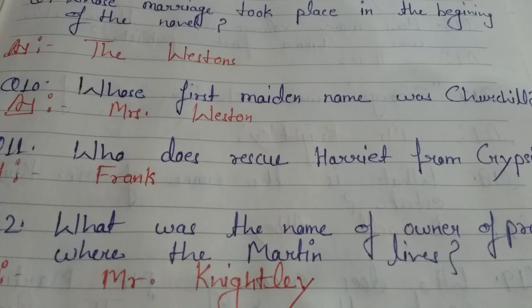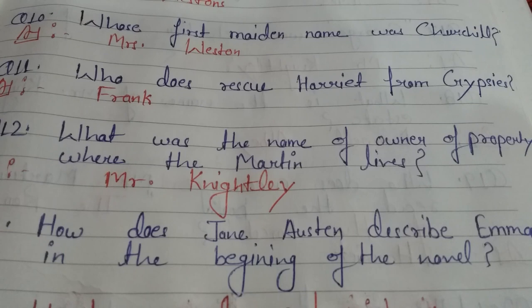Question 12: What was the name of the owner of the property where the Martins live? Jahan Martin rehte the, us property ke owner ka kya naam tha? The answer is Mr. Knightley.